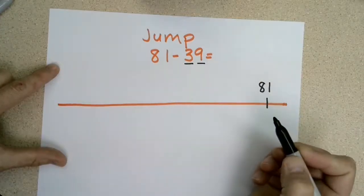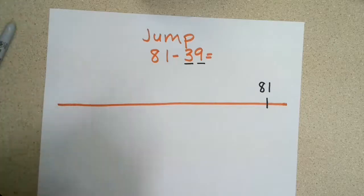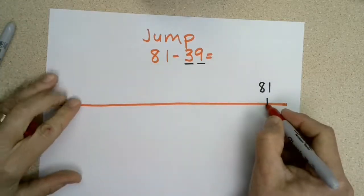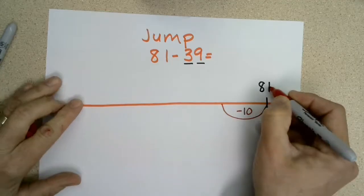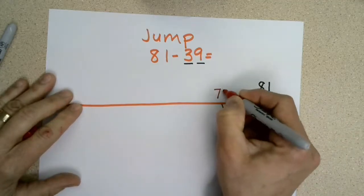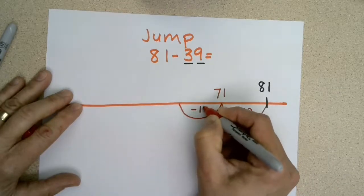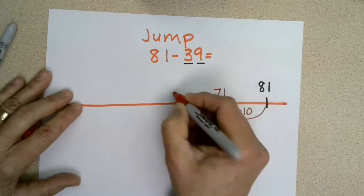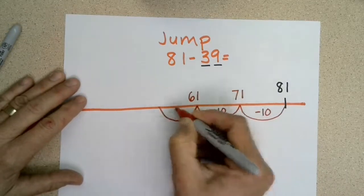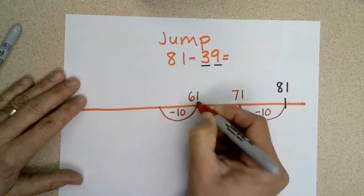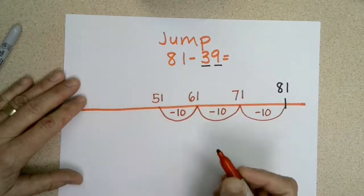I'm going to start by jumping back three tens underneath the number line. I'm going to jump back 10: 81 minus 10 is 71. I'm going to jump back 10 again: 71 minus 10 is 61. And I'm going to jump back 10 more: 61 minus 10 is 51. Now I've taken three tens away.